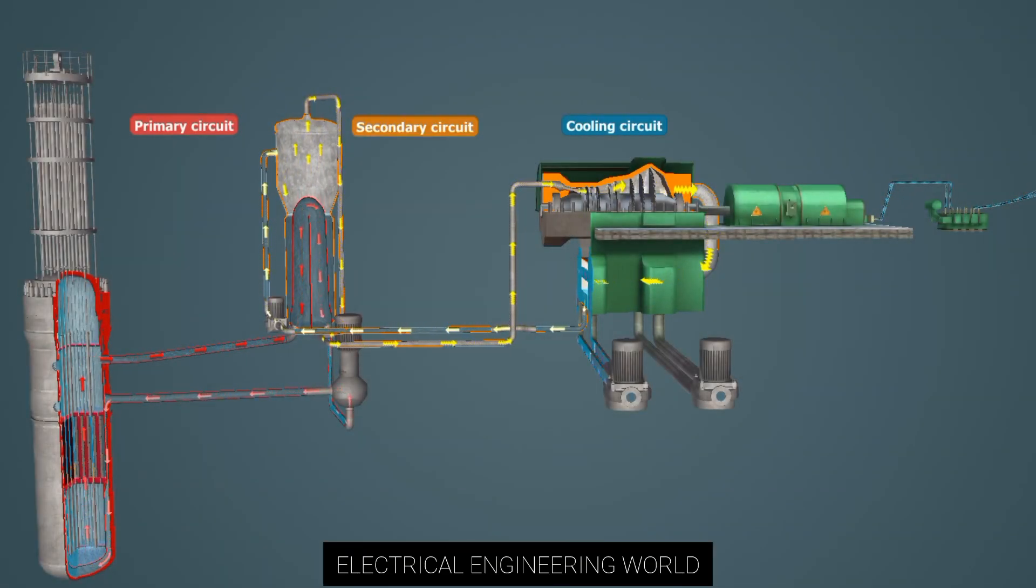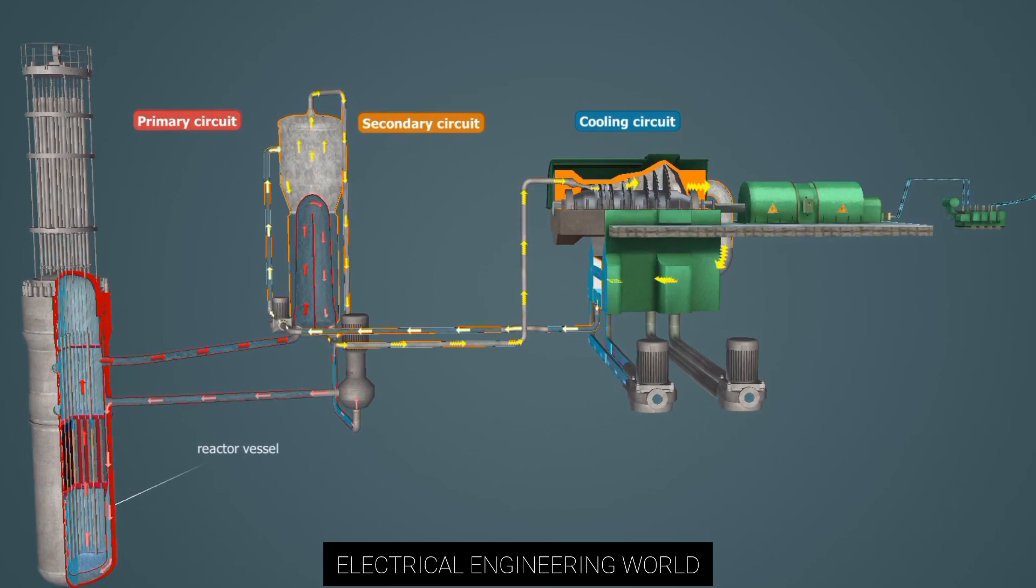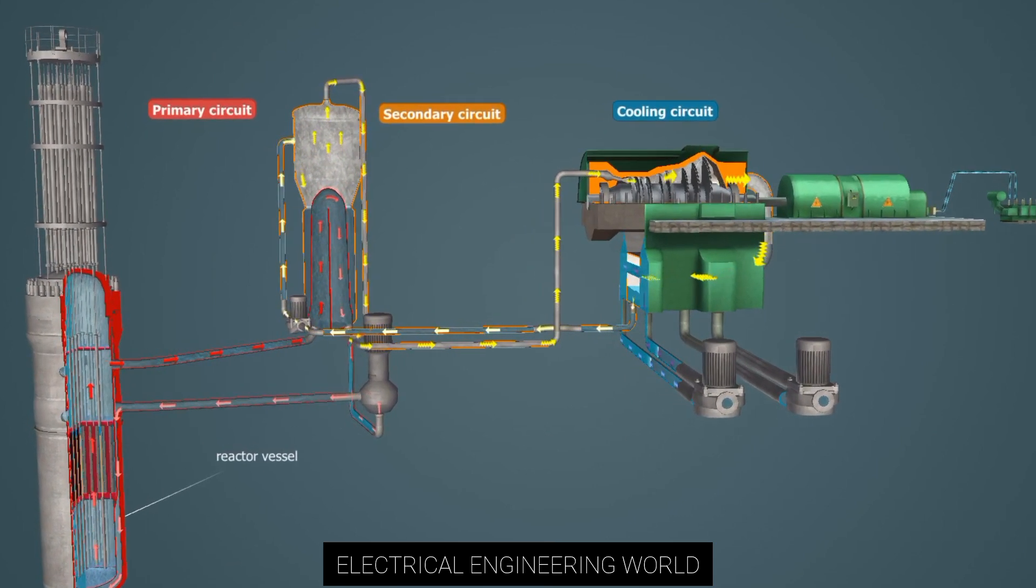Pressurized water reactors use uranium dioxide fuel rods. Nuclear fission generates heat, which is used in the primary circuit to heat water to a temperature of nearly 300 degrees Celsius.